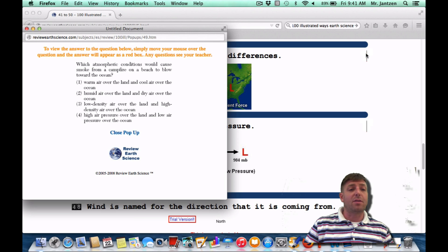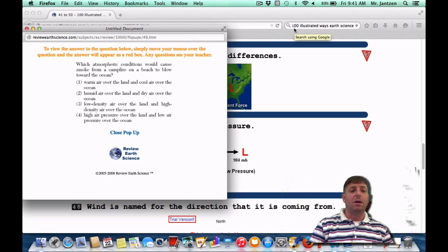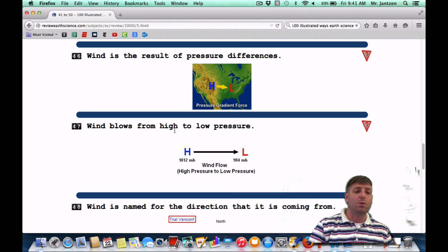On the regions, it says which atmospheric conditions would cause smoke from a campfire on a beach to blow toward the ocean. You're going to need high pressure over the land and low pressure over the water. It's going to go from high to low. It actually kind of reminds me of a land breeze. Maybe that's why the campfire, maybe it's at night, kind of an indication there, but we're going to go with choice four. High pressure over the land and low pressure over the water.